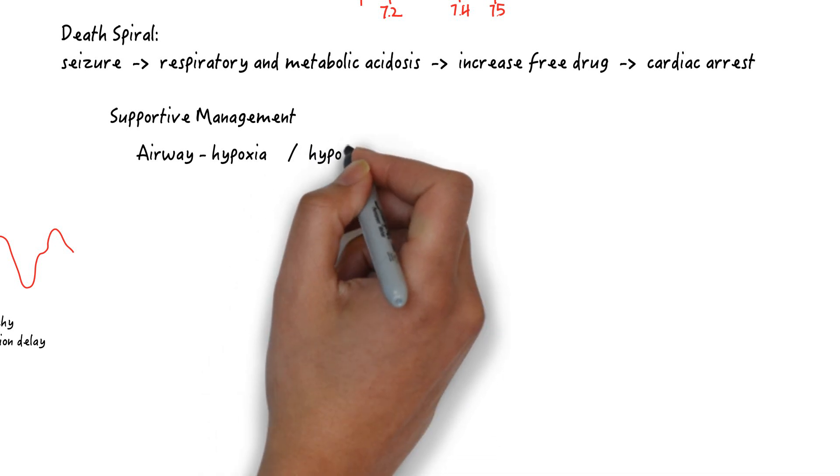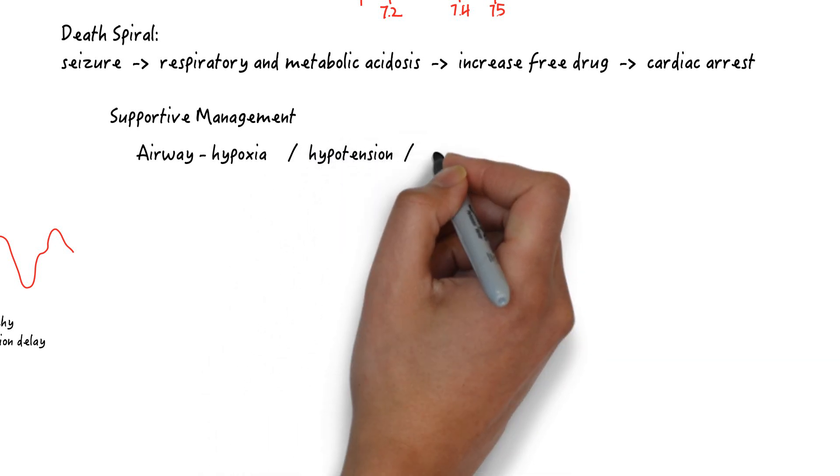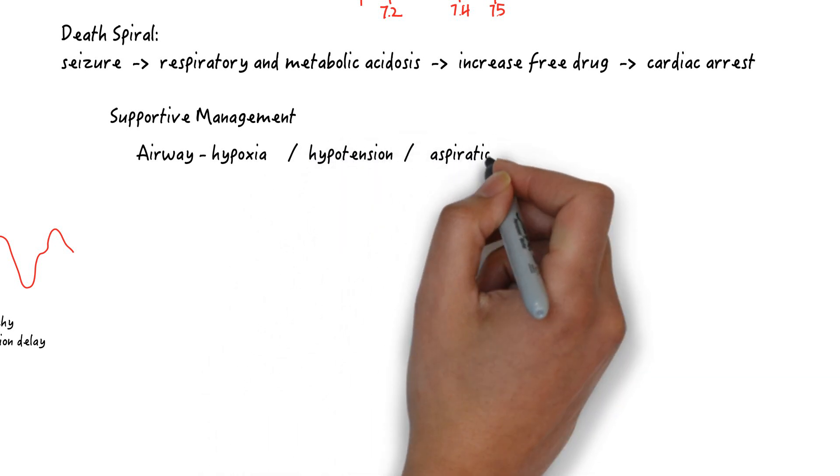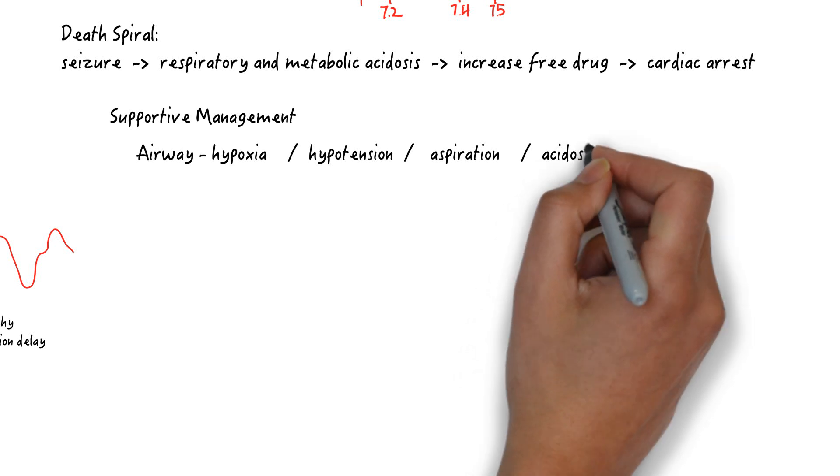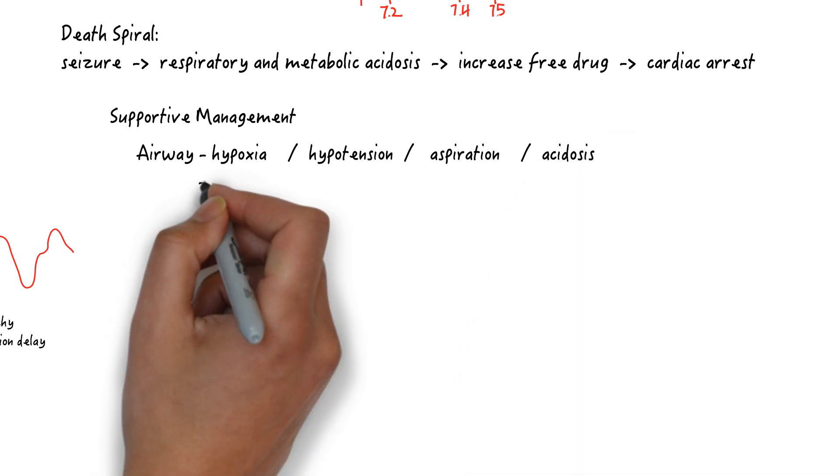The dangers of intubating a typical patient can be ranked in the following order: hypoxia, for which we pre-oxygenate; hypertension, for which we use fluids and push dose pressors;